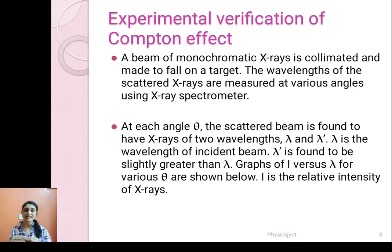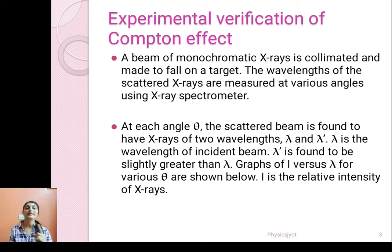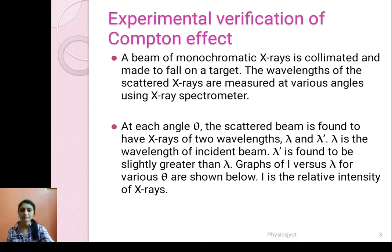What is Compton effect? When x-rays are made to fall on a target, the scattered radiation consists of a wavelength which is the same as that of the incident radiation, and one more wavelength which is slightly greater than the wavelength of the incident radiation. So here we get lambda and lambda dash, where lambda dash is found to be slightly greater than lambda. If we plot a graph of intensity versus lambda for various values of theta, then we get some figures.